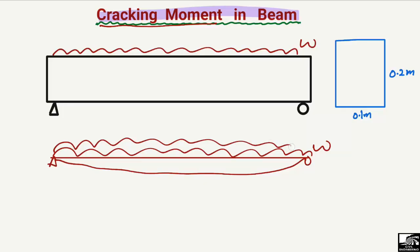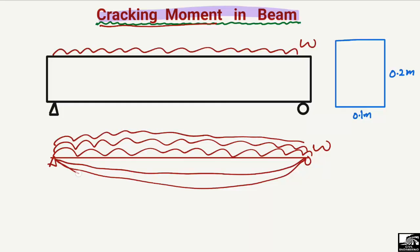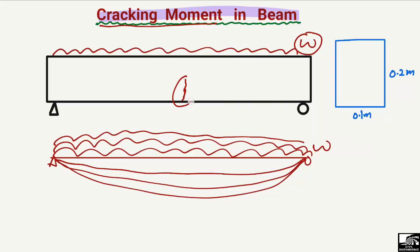By increasing this load, the bending moment will also increase. If I further increase the load, the bending moment will be further increased. At a certain point we will reach a state where there will be a crack in the tension portion of the beam — this is the first crack. The load at which the first crack occurs is called the cracking load, and the corresponding moment is known as the cracking moment.